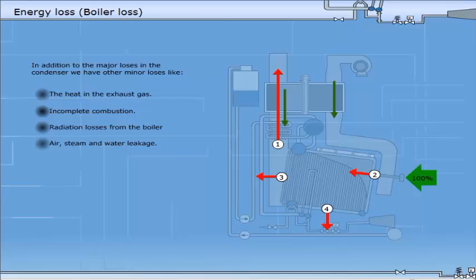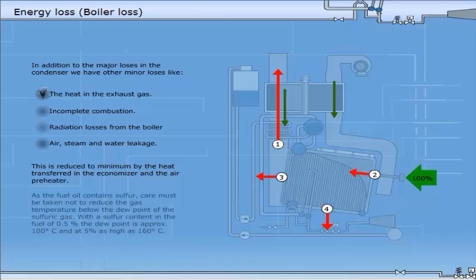Air, steam and water leakage. This is reduced to a minimum by the heat transferred in the economiser and the air preheater. As the fuel oil contains sulphur, care must be taken not to reduce the gas temperature below the dew point of the sulphuric gas. With a sulphur content in the fuel of 0.5%, the dew point is approximately 100°C and at 5% as high as 160°C.